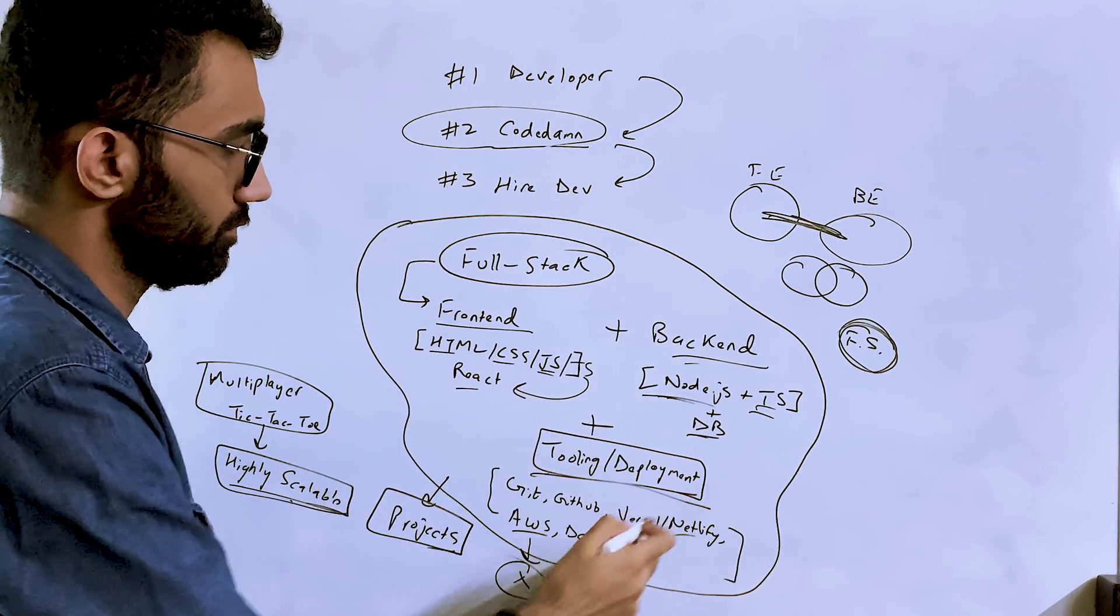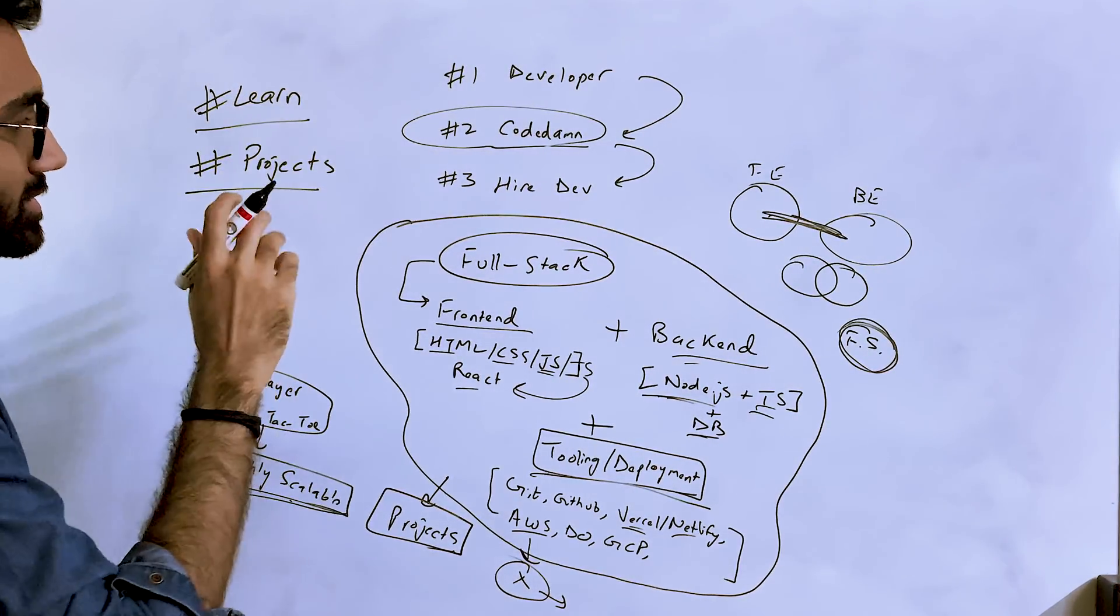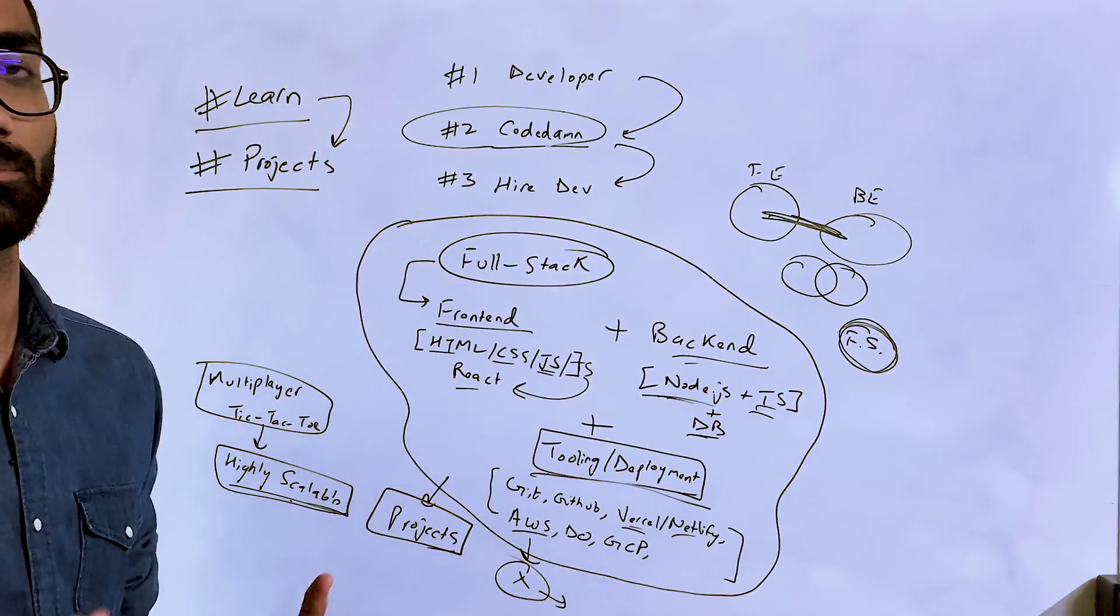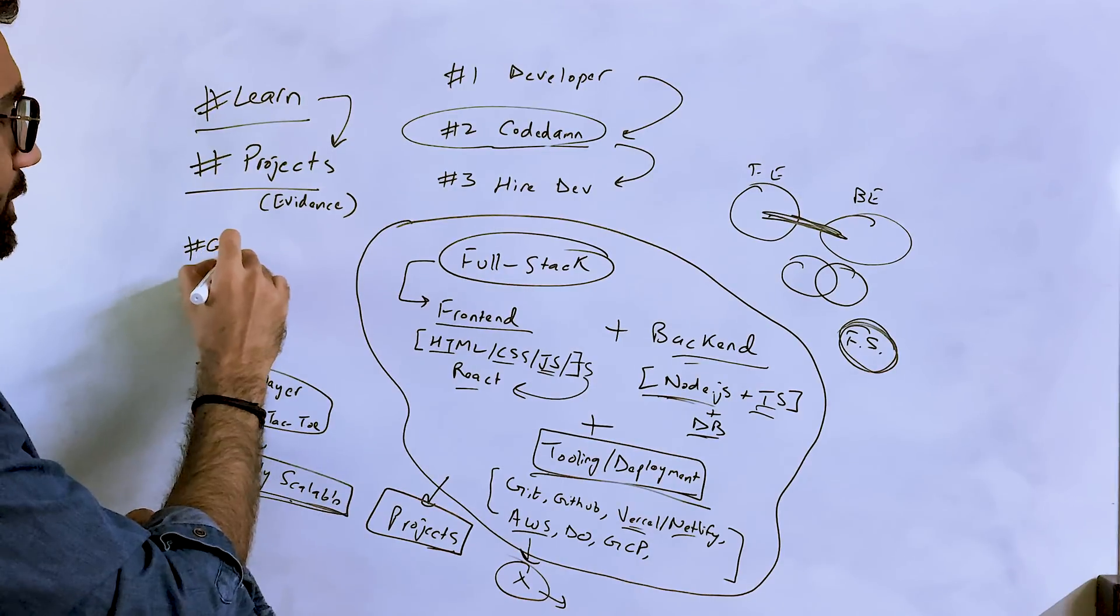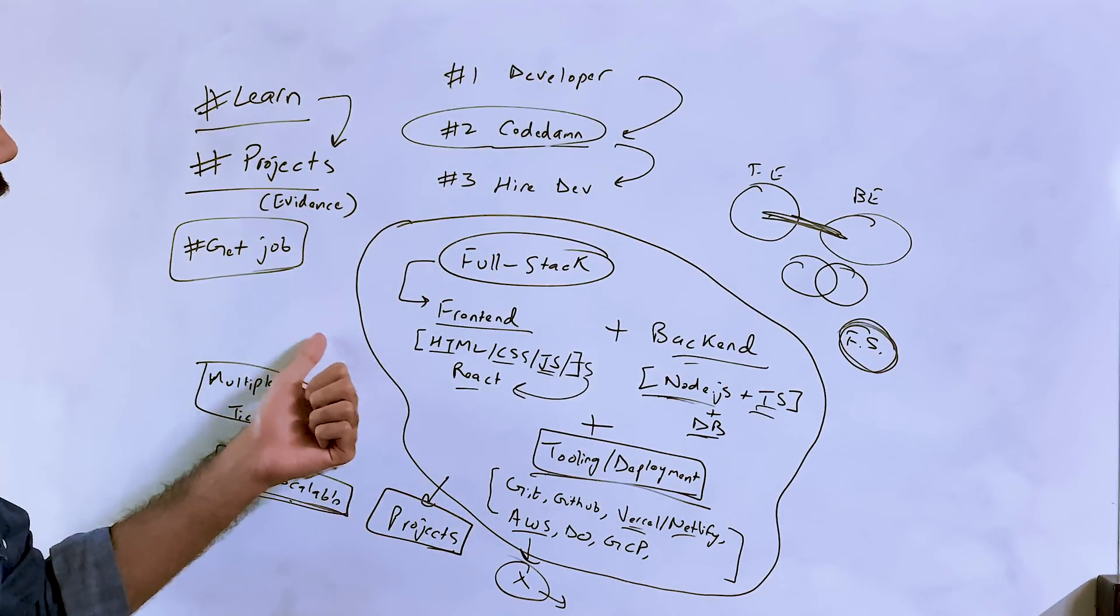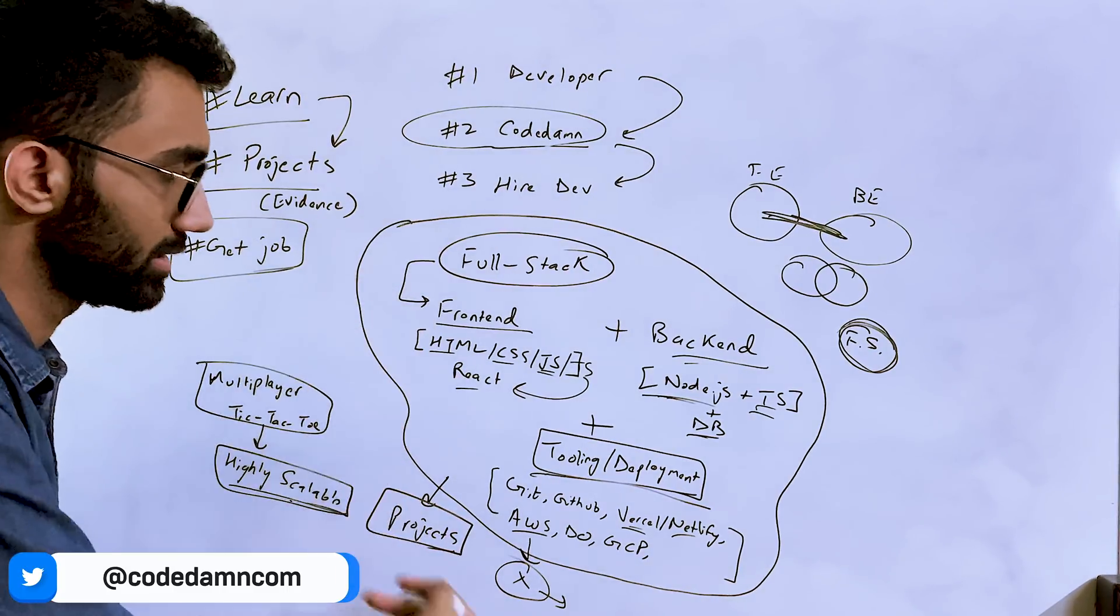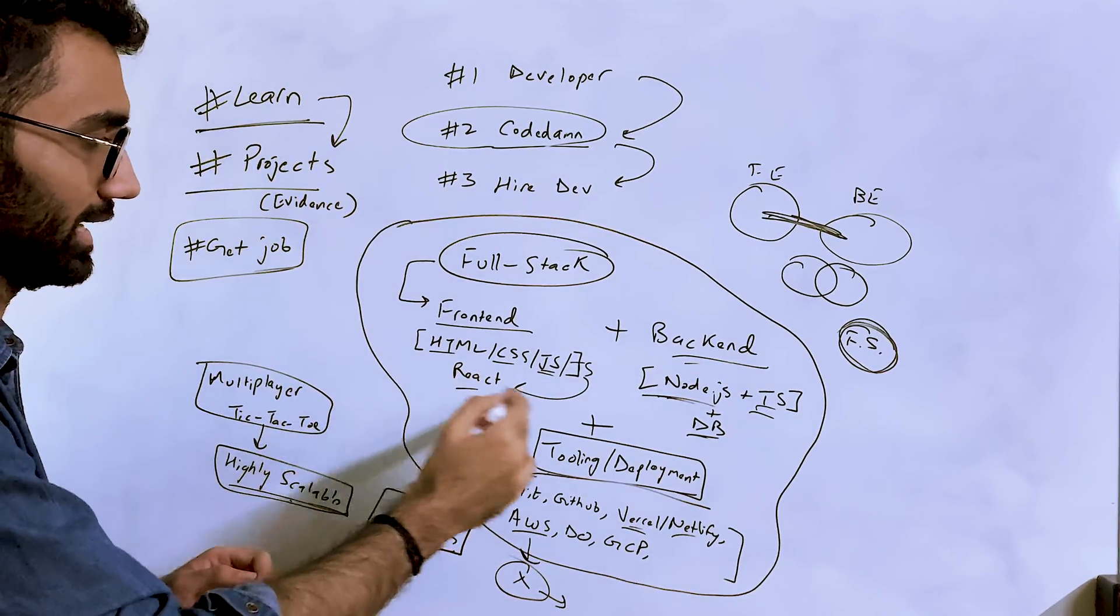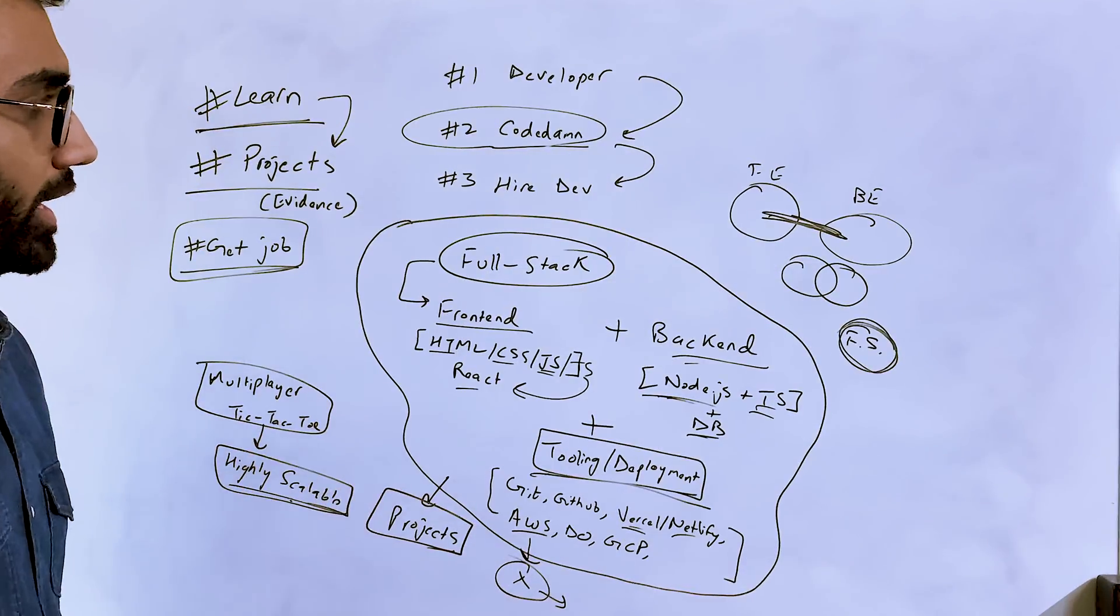The point is: number one, you have to learn. Second step is projects to back your learning, because in an interview you will not be able to convince someone that you know something until you quantify that. This is evidence of your learning. And then finally, get that job. This is what I actually do when evaluating people for job interviews at CodeDamn - taking a look at their projects, maybe giving them an assignment to build, seeing how much they know the core fundamental concepts, and then offering them a job.